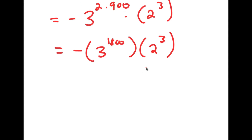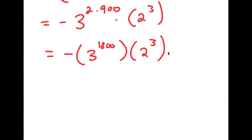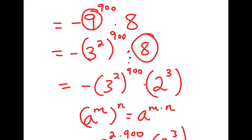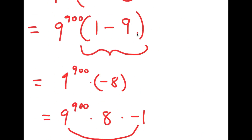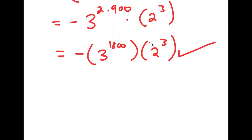So this is our answer in its most simplified form. If you want, you can try computing 3 to the power of 1800, but that number is way too big for any calculator to output. So this is the simplest form we can put our answer in for 9 to the power of 900 minus 9 to the power of 901 — see how much of a difference it is.